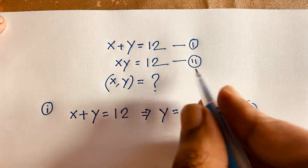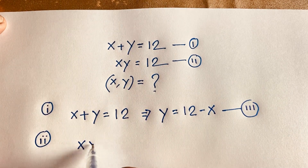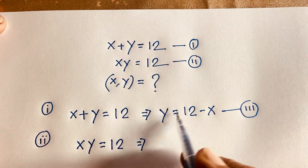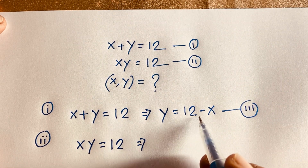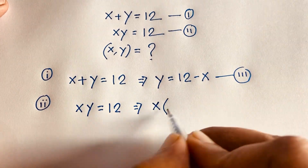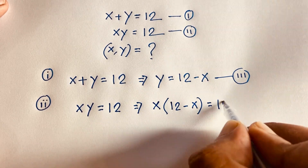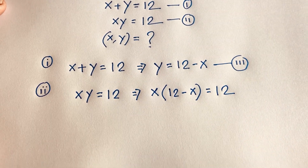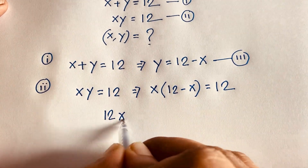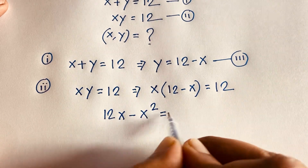Our second equation is x times y equals 12. Now, y is equal to 12 minus x, so I substitute this into the equation. It will be x times (12 minus x) is equal to 12. Expanding: 12x minus x squared is equal to 12.